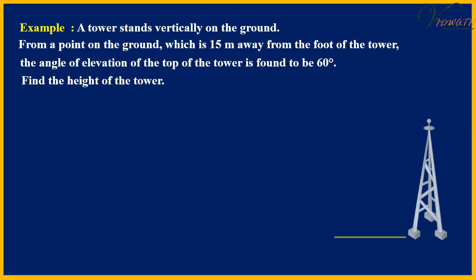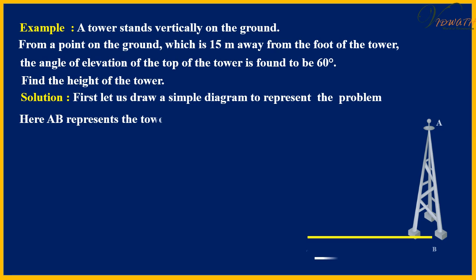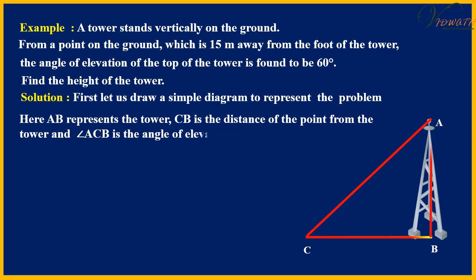Solution: First, let us draw a simple diagram to represent the problem. Here, AB represents the tower, CB is the distance of the point from the tower, and angle ACB is the angle of elevation. We need to determine the height of the tower, that is AB.